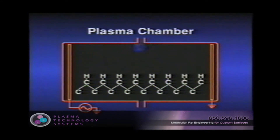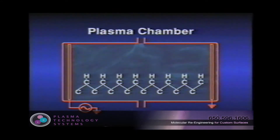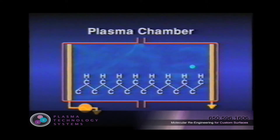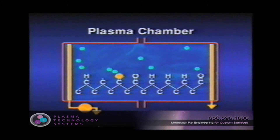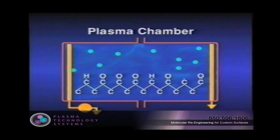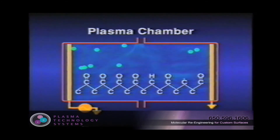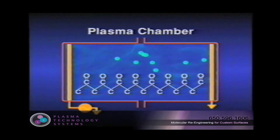Process gas is introduced, and after pressure equalization, the RF energy is turned on, creating a plasma. Active species in the plasma collide with the polymer surface, creating free radicals. These free radicals are thermodynamically unstable, and reach out into the surrounding environment where they combine with groups in the plasma to form new groups on the polymer surface.